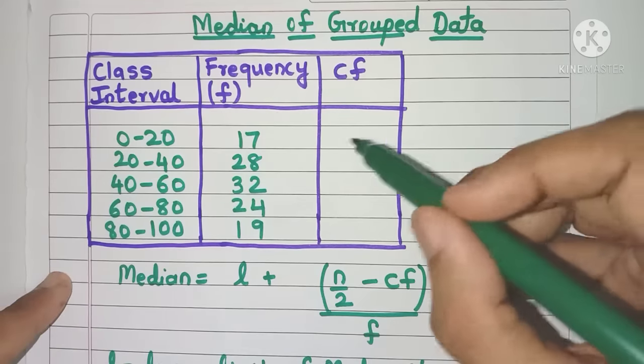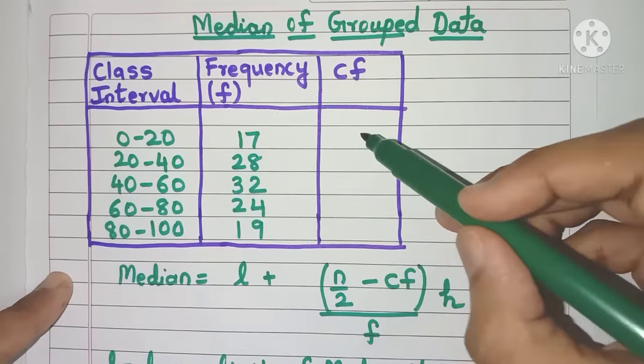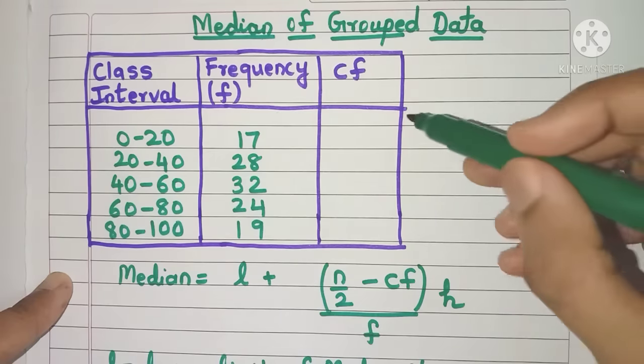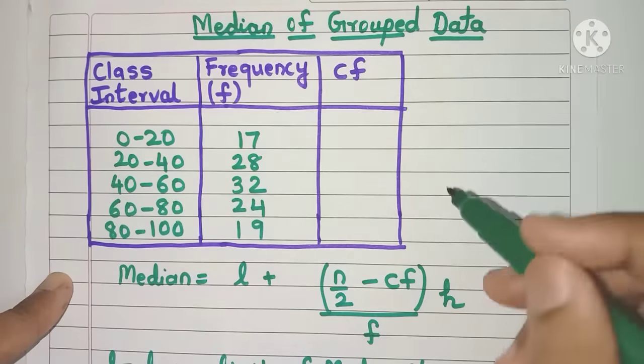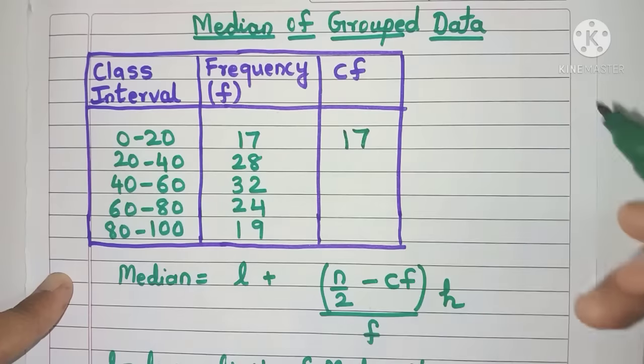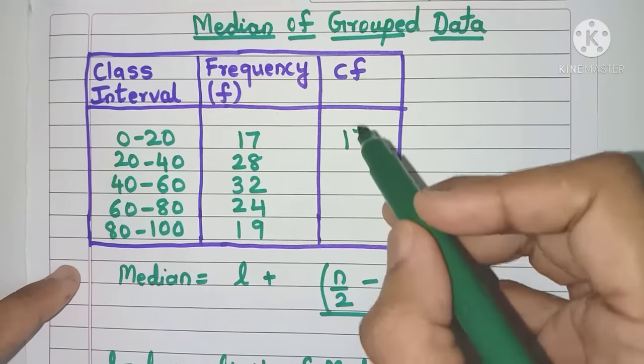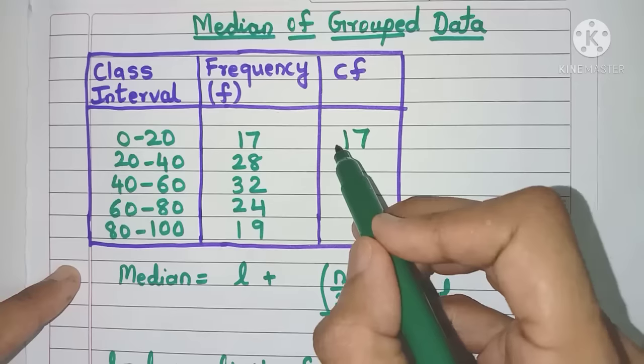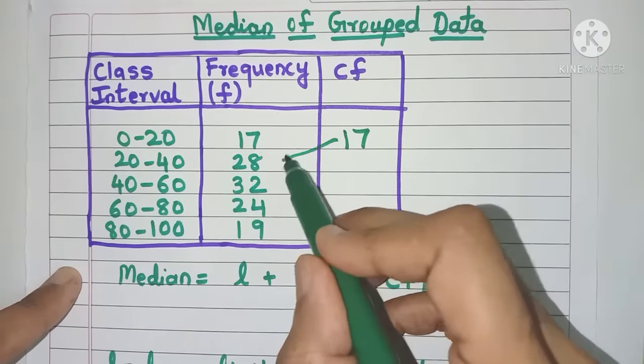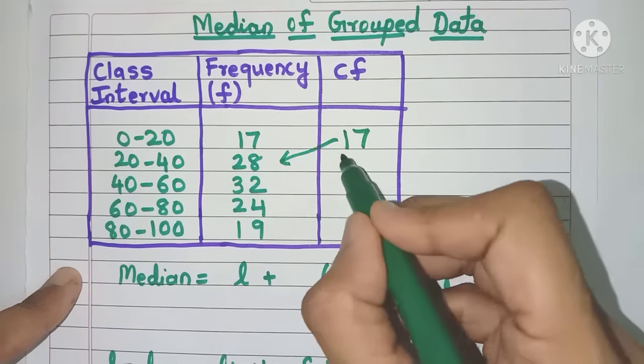For the first class interval, the F value and the CF value are going to be the same because there is no previous frequency. So we'll write 17 here. Now for the next class interval, you simply add the previous CF with this frequency. So 17 plus 28, you'll get 45.